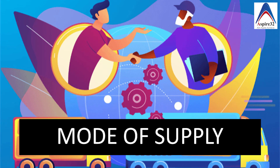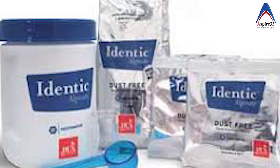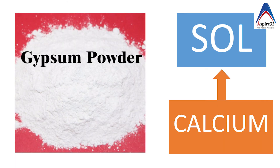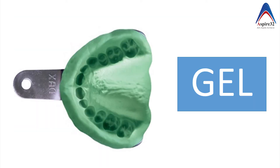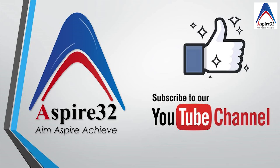The next segment is how alginate is available in the market — the mode of supply. Usually we buy alginate powder in bulk packs, although small packs are also available, which you mix with water to make the impression. There is also a salt state available of alginate which is devoid of any calcium, so it won't set unless you add some gypsum powder, which converts the salt to gel by supplying calcium. You also have a two-tube system in which the first tube contains the alginate and the second tube contains the calcium.